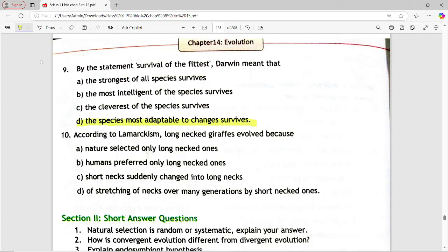Next is, according to Lamarckism, long-necked giraffe evolved because. Options are, nature selected only in long-necked ones, humans preferred only in long-necked ones, short-necked suddenly changed into long-necked, of stretching of necks over many generations by short-necked ones. Answer is option D, of stretching of necks over many generations by short-necked ones.